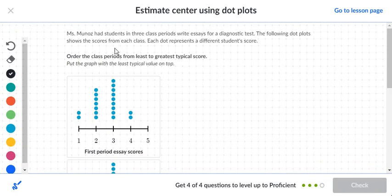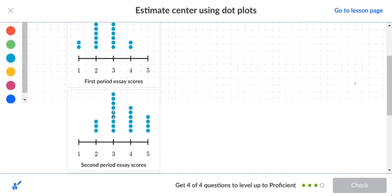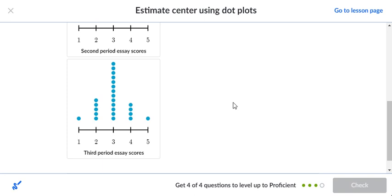Okay, Miss Munoz had students in three class periods write essays for a diagnostic test. The following dot plot shows the scores for each class. Each dot represents a different student's score. So we want to put these in order. Basically, this is left, this is in the middle.